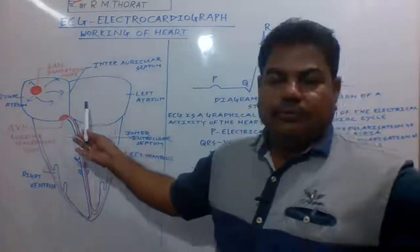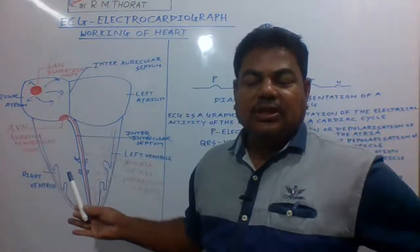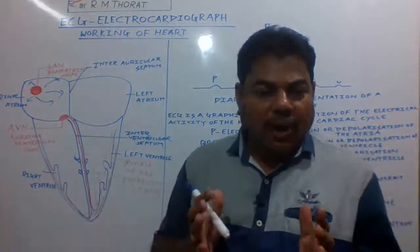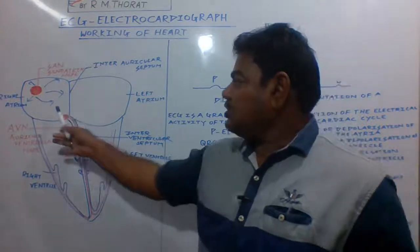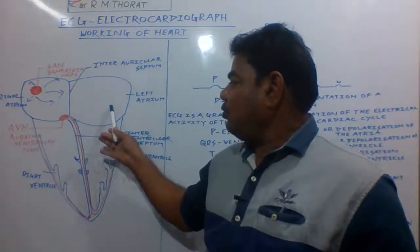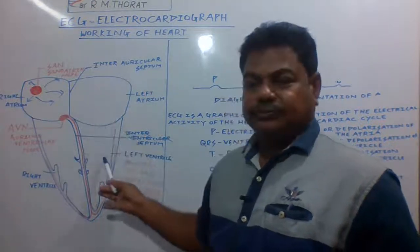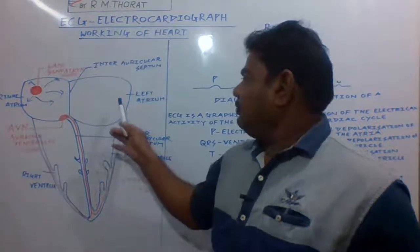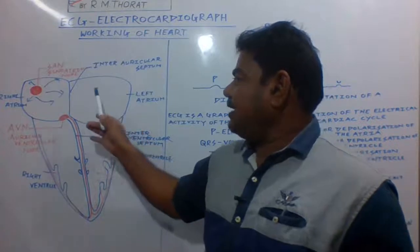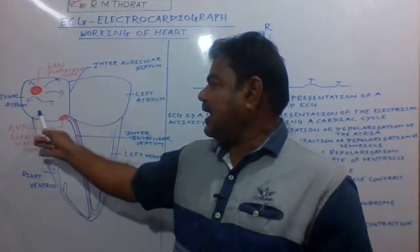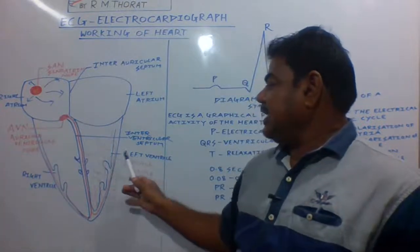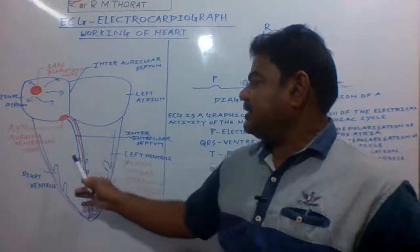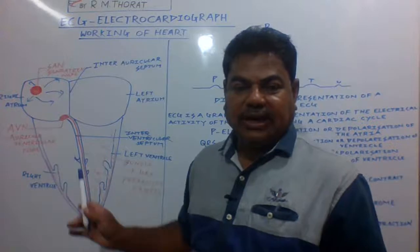We are concerned with the working of the heart. The heart consists of four chambers: the left atrium, the right atrium, the left ventricle, and the right ventricle.